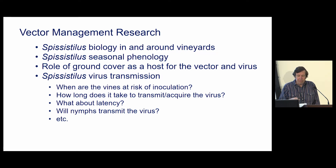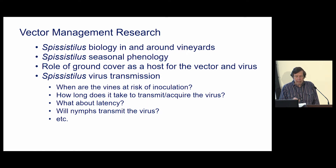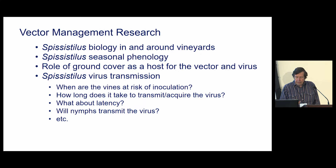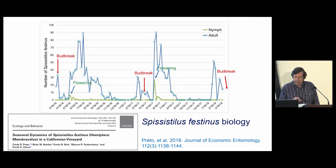We embarked on trying to determine more about their biology in terms of how we might be able to manage the insect better around vineyards. We looked in detail at the biology around the vineyards, the seasonal phenology of the vector, and tried to determine what role ground cover plays as a host for the vector, and also if the ground cover might be infected by red blotch virus — which it isn't. The only plants we've found red blotch virus in are either cultivated grapevines or wild vines. We also wanted to know if the nymphs transmit the virus, and we still haven't been able to determine that.